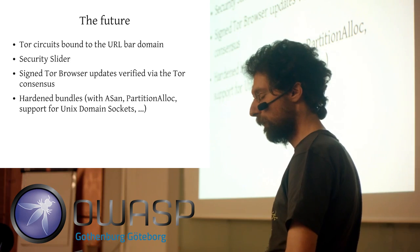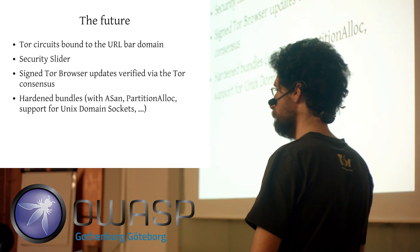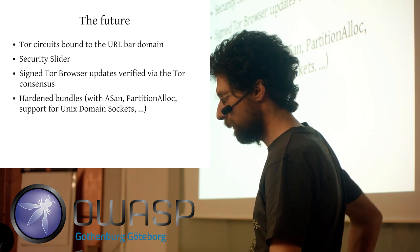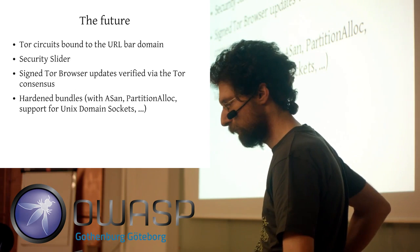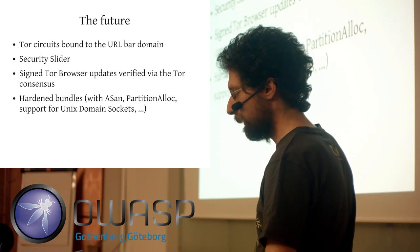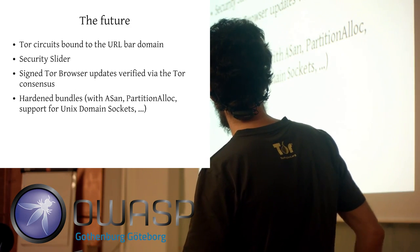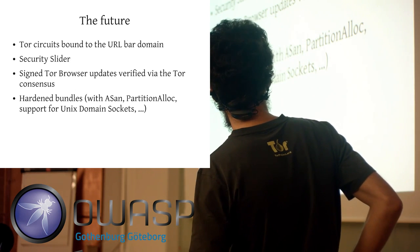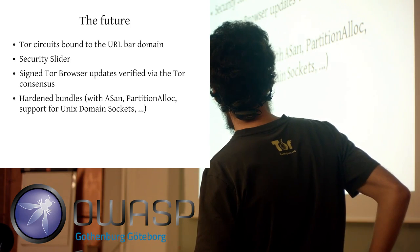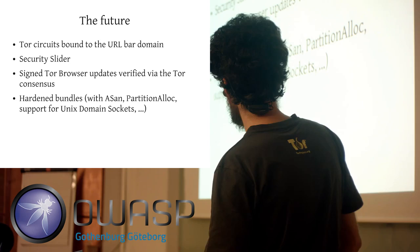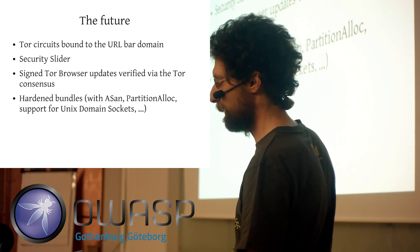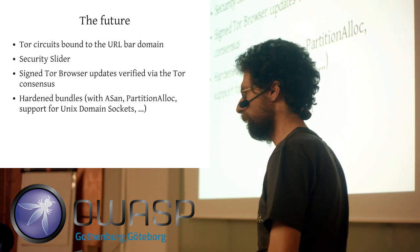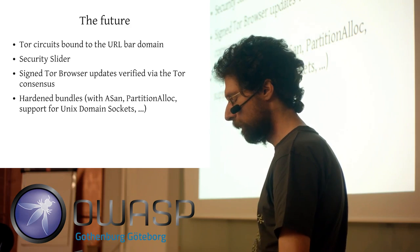We are also implementing Tor Browser updates signed by a key, so you're not only relying on HTTPS anymore — the bundles are signed, and later they'll even be verified via the Tor consensus. We're also planning so-called Hardened bundles by end of year, built with AddressSanitizer and memory hardening techniques. They support Unix domain sockets in a way that lets you, at least on Linux and macOS, disable the whole network stack and communicate with your Tor instance only via Unix domain sockets, making accidental network request leaks much harder.